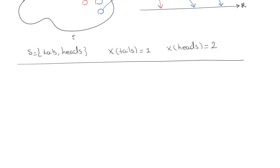The next definition is distribution function. So, F_X of lambda equals probability of X of s less than or equal to lambda.